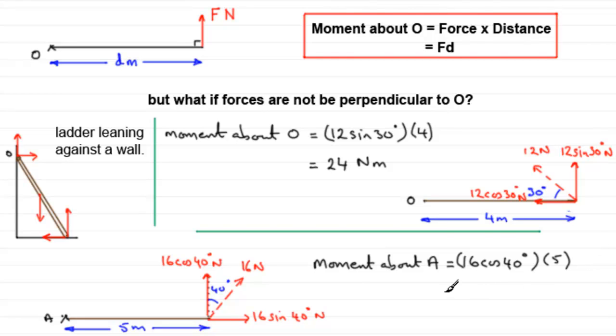Now if you work this out, this comes out to be 61.283 and so on. And if we round this to 3 significant figures, it's going to be 61.3 newton meters.